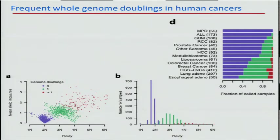It's not as simple as thresholding by ploidy. You really want to use the allelic copy number data and make thresholds in that space. Because after genome doubling, the peak of the genome doubled samples is about 3N, meaning there are losses that occur prior to genome doubling, and even more losses that occur following that genome doubling event.